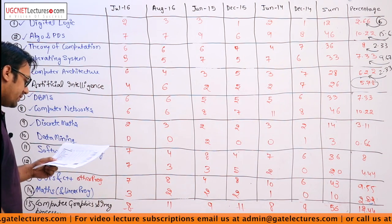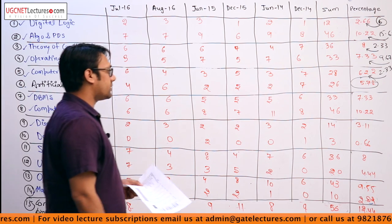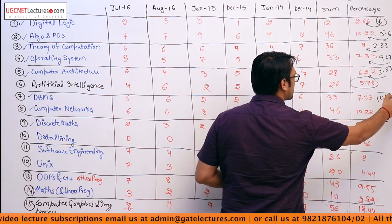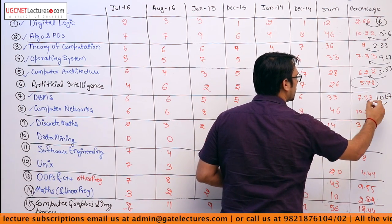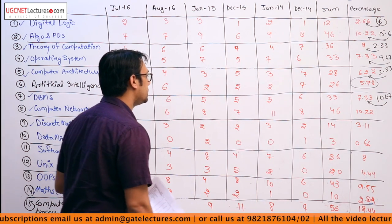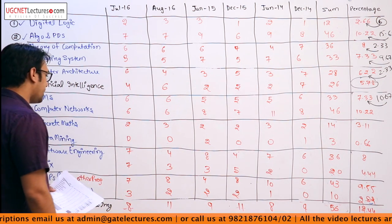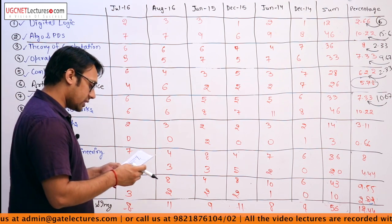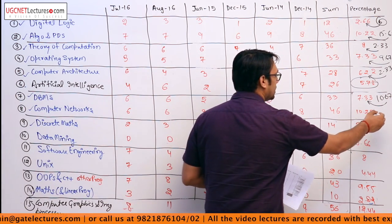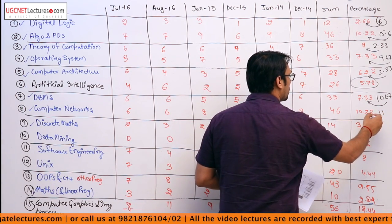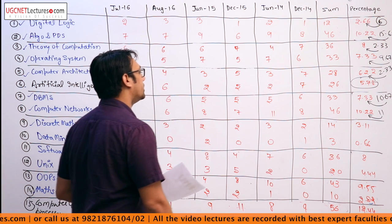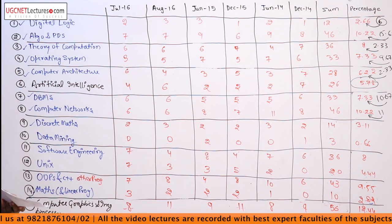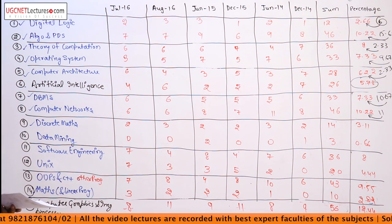DBMS subject was contributing 10.66%, which has now decreased to 7.33%. Then we have computer networks, which was previously contributing approximately 11% of marks. There is not much change in computer networks, but computer networks is again a very, very important subject.